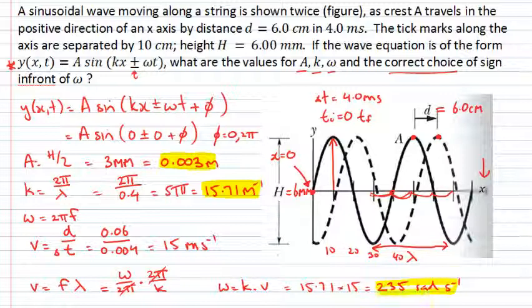So, so far, I've managed to find both a, k, and omega. What about the correct choice in front of my omega function? So is it plus or is it minus?